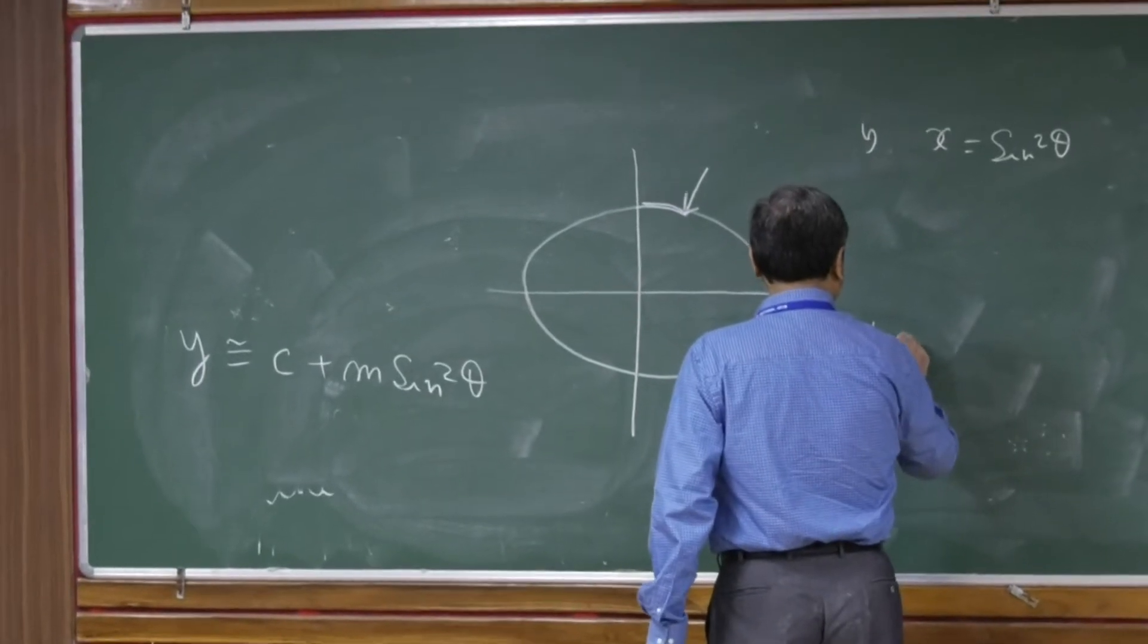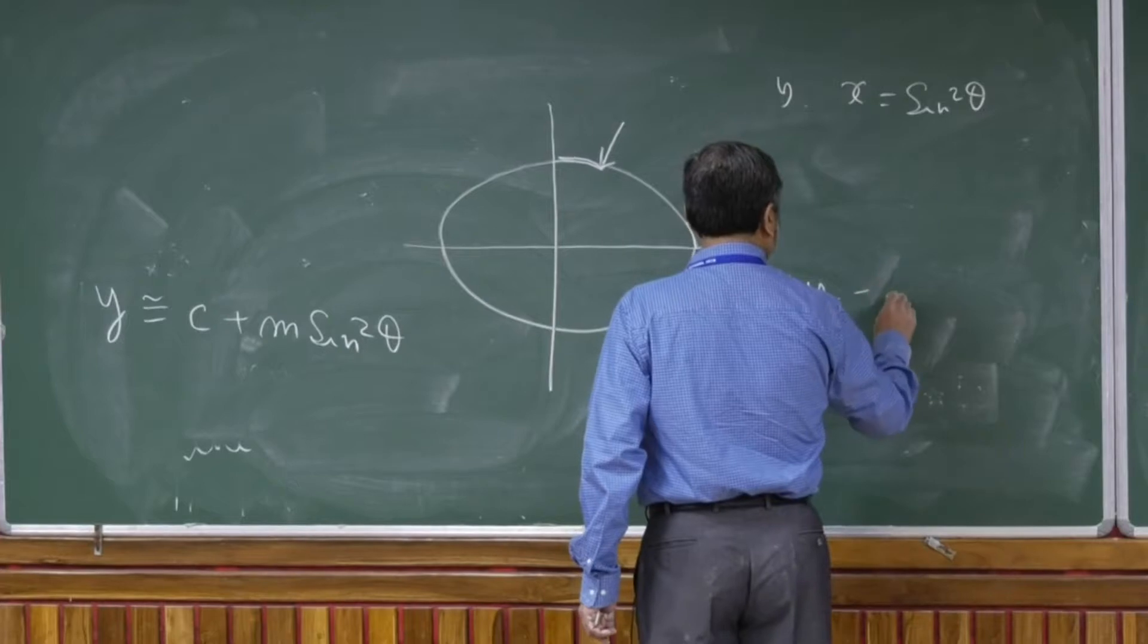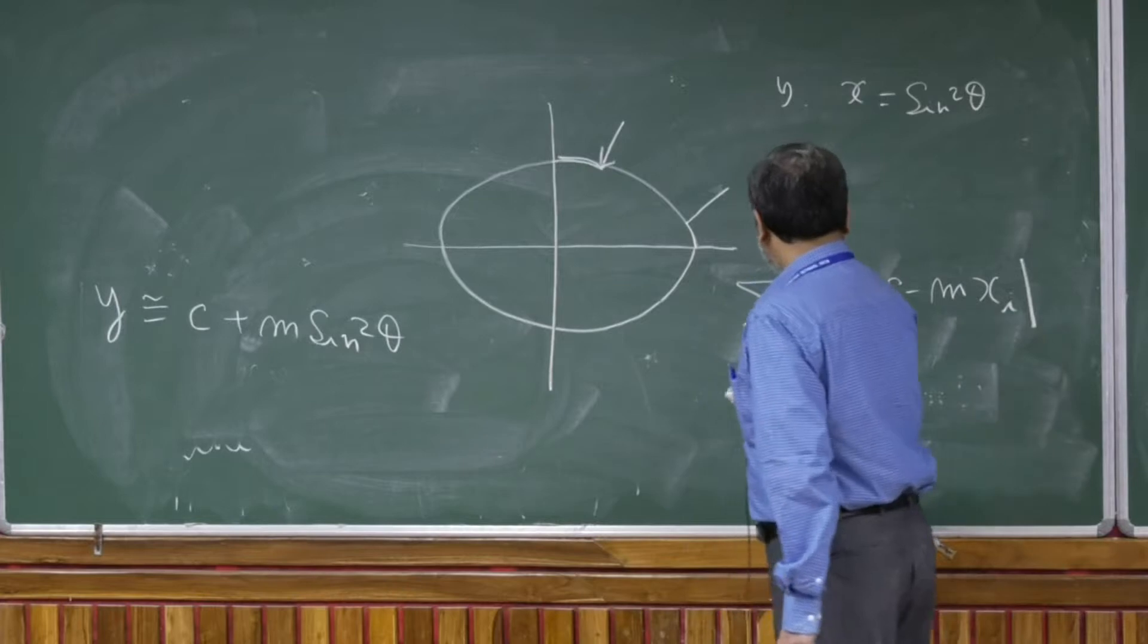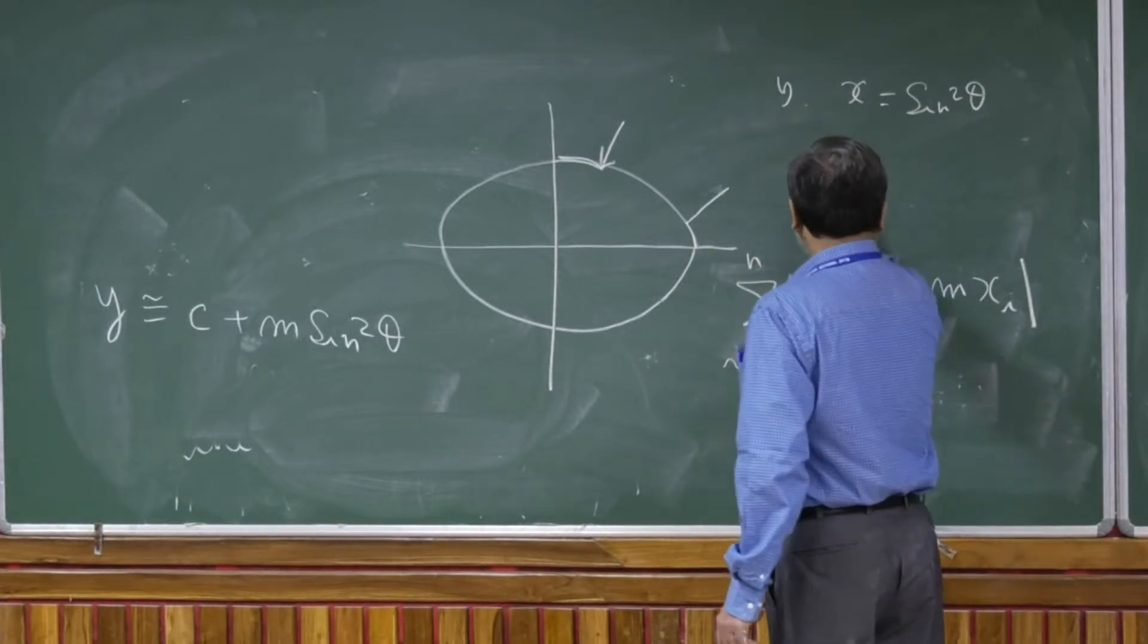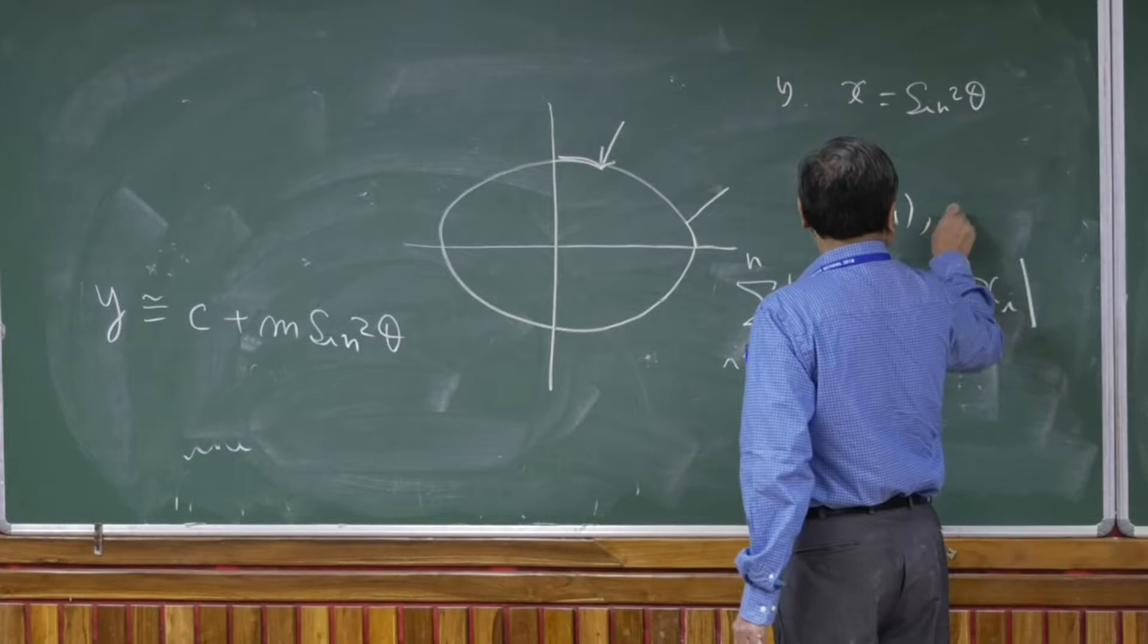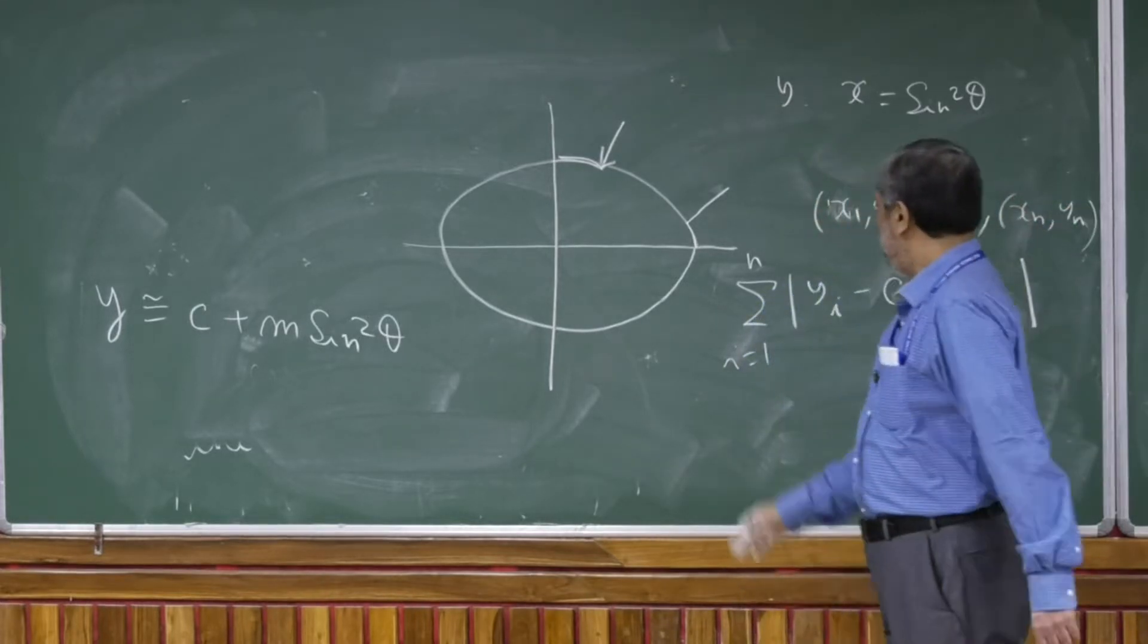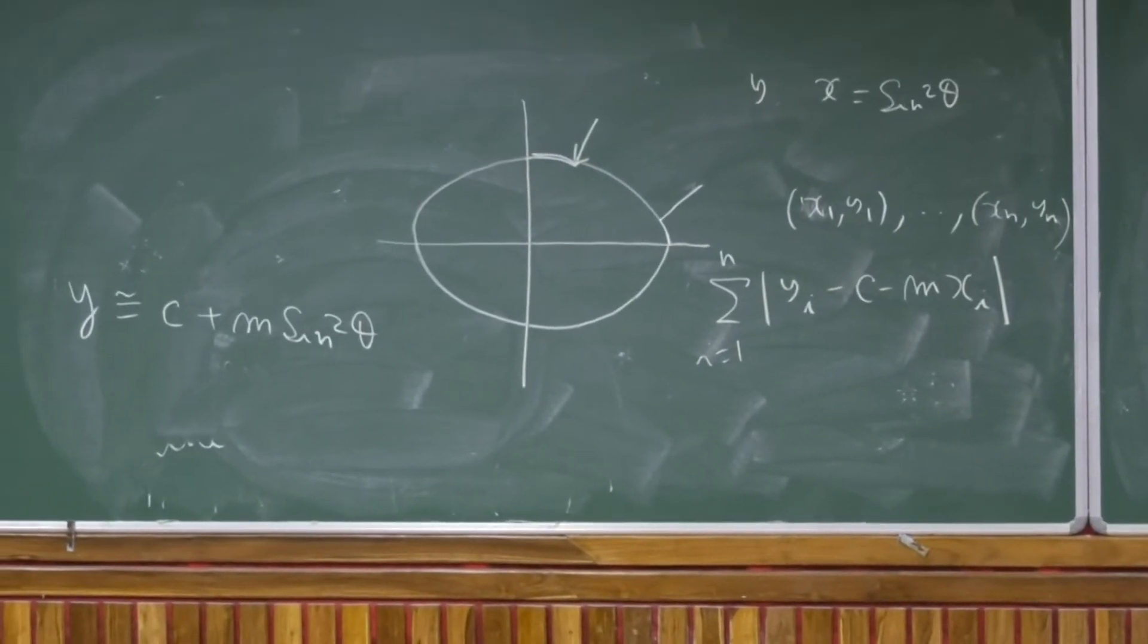So they were trying to solve this problem: minimize sum of absolute values of yi minus c minus mxi. So the least absolute deviation problem. The data was x1, y1, through xn, yn. And people were trying to solve this minimization problem.